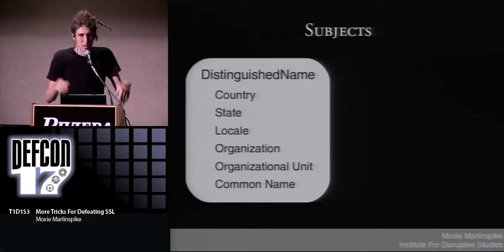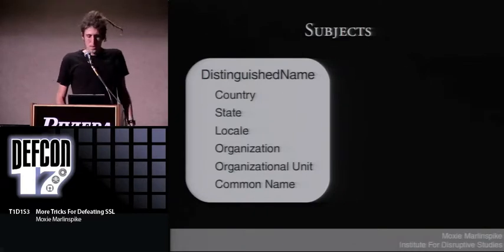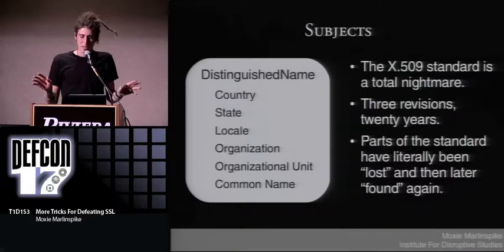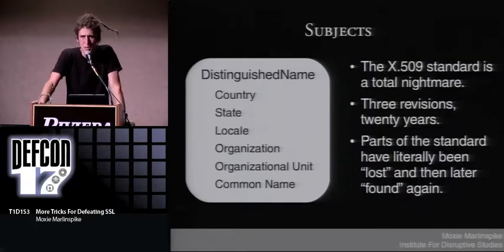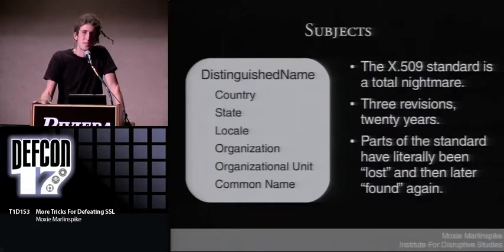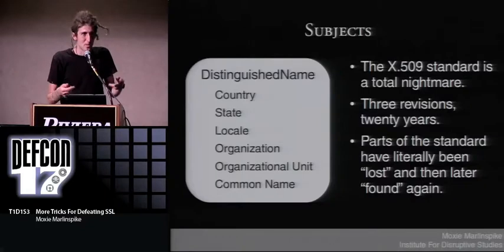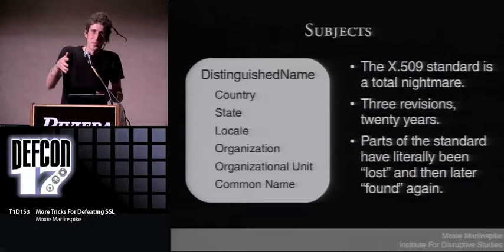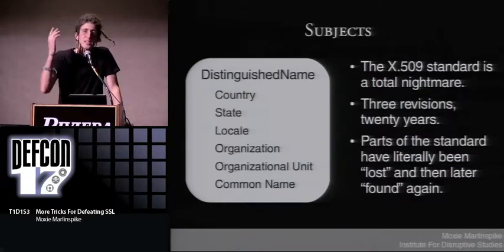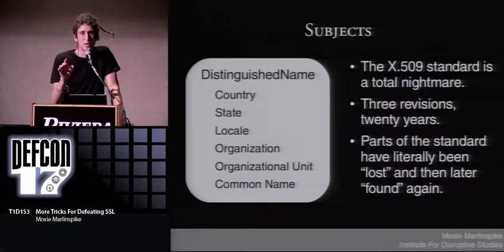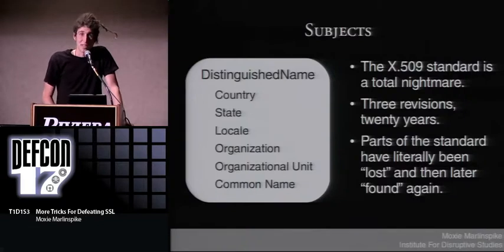I'm simplifying a bit — subjects aren't just ASCII strings; they're a structure called a distinguished name. To understand this, you have to know that the X.509 standard is a total nightmare. There have been three revisions over 20 years, and parts of the standard have literally been lost and found again. When the 1988 standard was being updated to the 1991 standard, someone just forgot to cut and paste part of it. It was published as the standard, people implemented it, then later they realized part was missing. The result is insane: 'the standard says do this, but really you do that, because of the time they forgot part of the standard.'